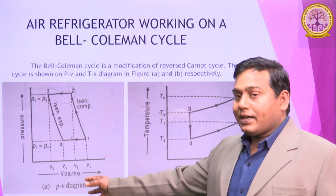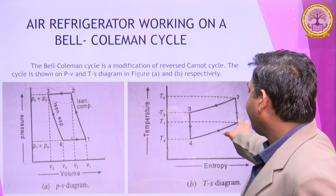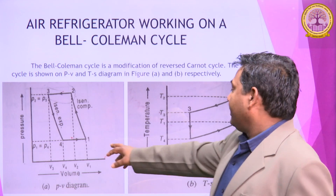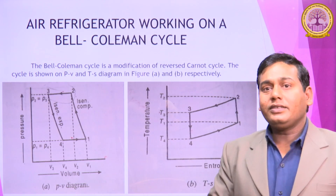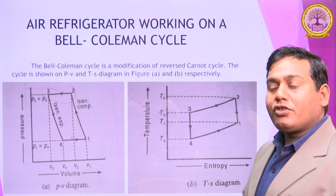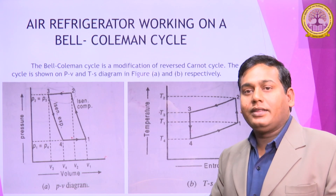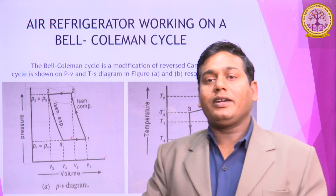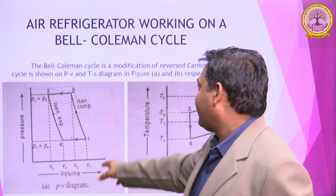Regarding this P-V Diagram, we are discussing the Temperature-Entropy Diagram. In the P-V Diagram, the 1 to 2 process — volume decreases from 1 to 2. This is an Isentropic Process, which is an Adiabatic Process. In the Isentropic Process, heat remains constant — DQ is equal to 0 in this process.